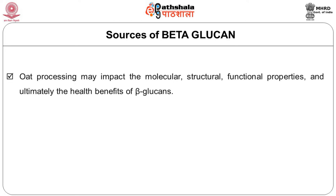When we take rich sources of beta-glucan — particularly oats — processing may impact the molecular and chemical structure and degree of polymerization, structural and molecular interactions, functional properties like viscosity, water binding capacity and solubility, and ultimately the health benefits of beta-glucan. Steaming and flaking involving heat, moisture and mechanical shear may affect the molecular structural characteristics of beta-glucan and the interaction between beta-glucan and other oat components, thus also impacting the viscosity of oat slurries.